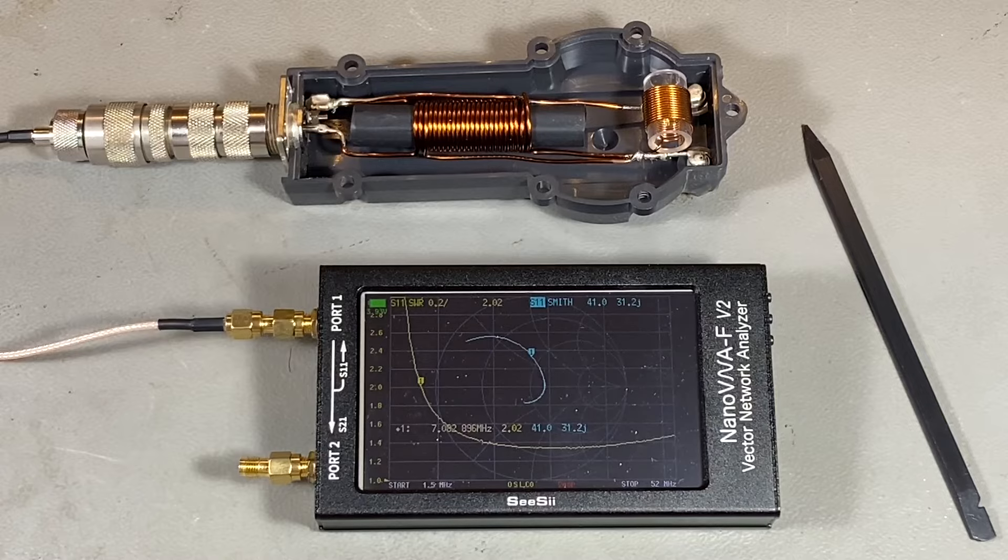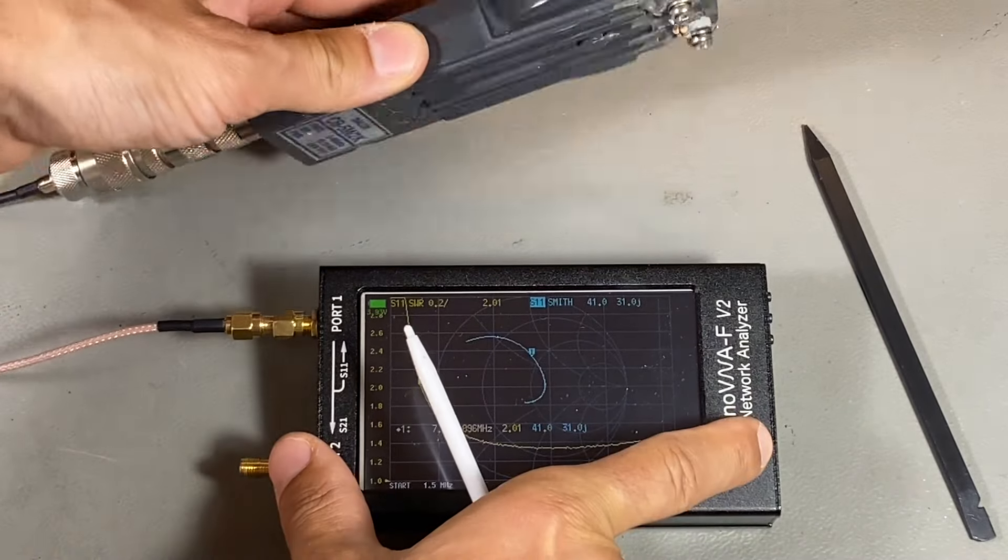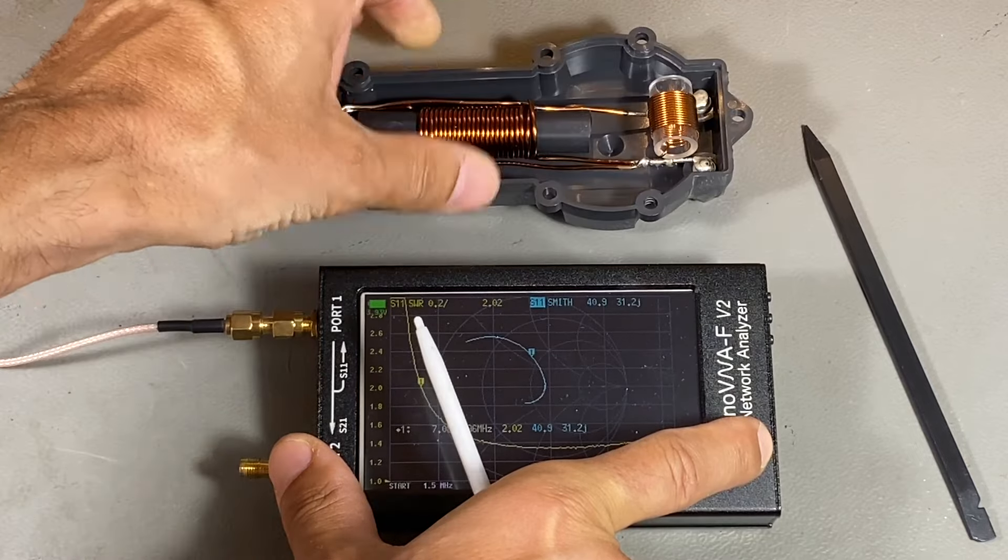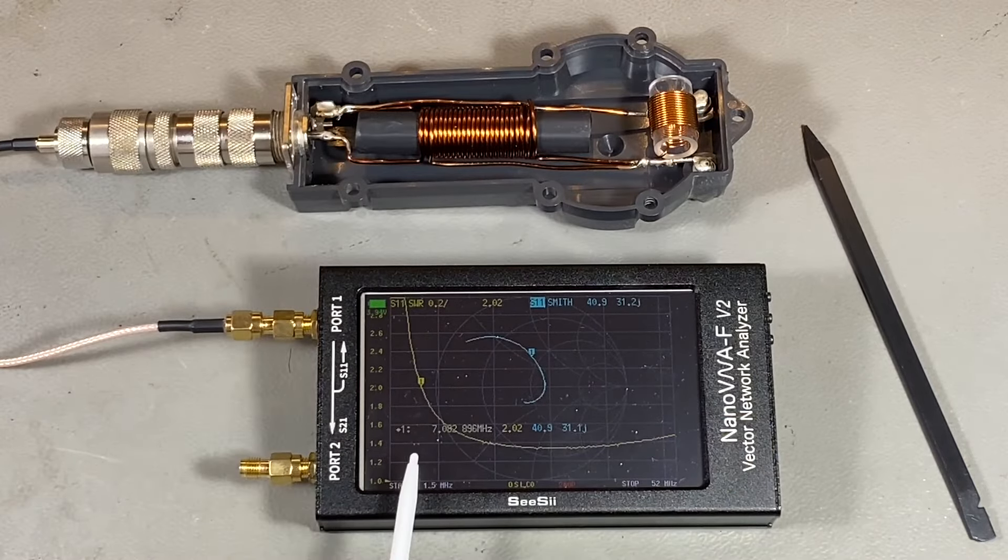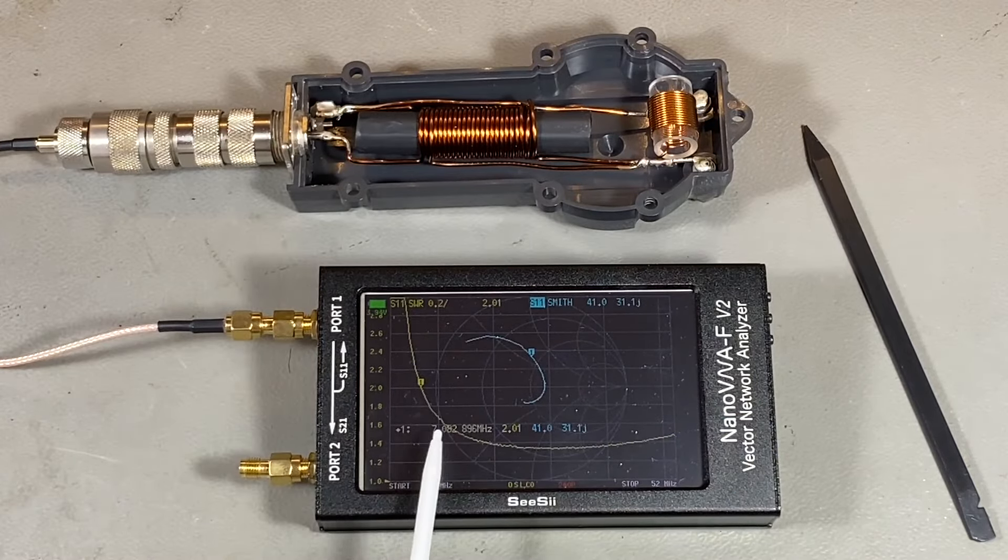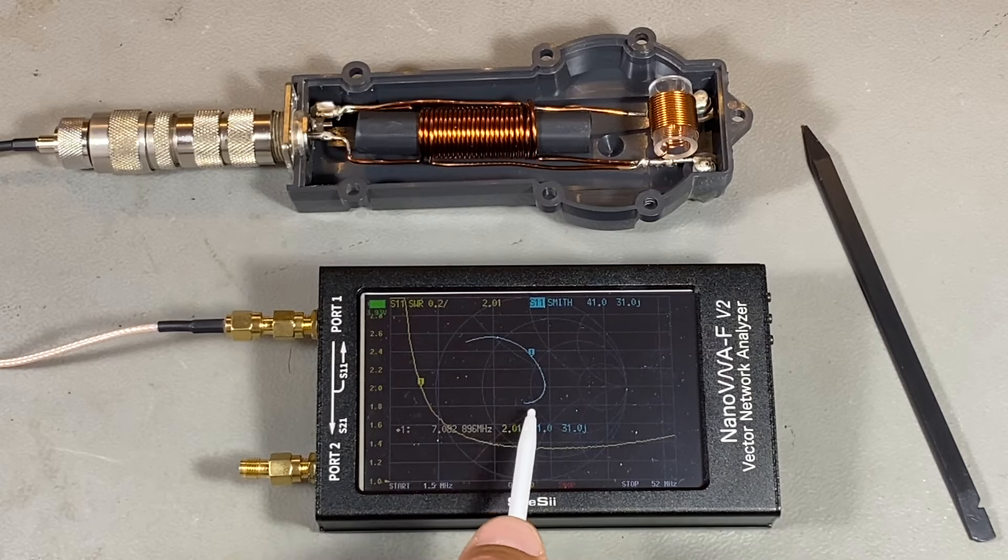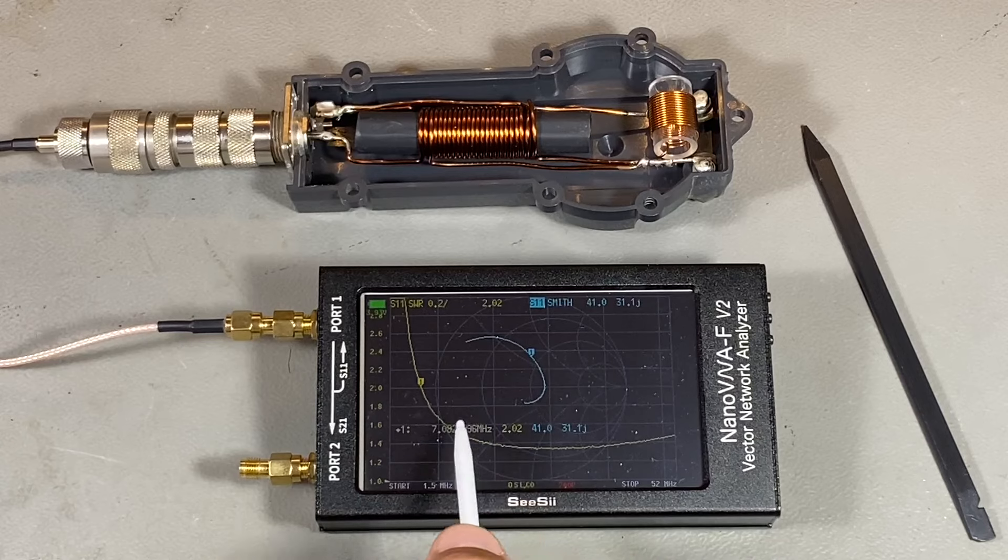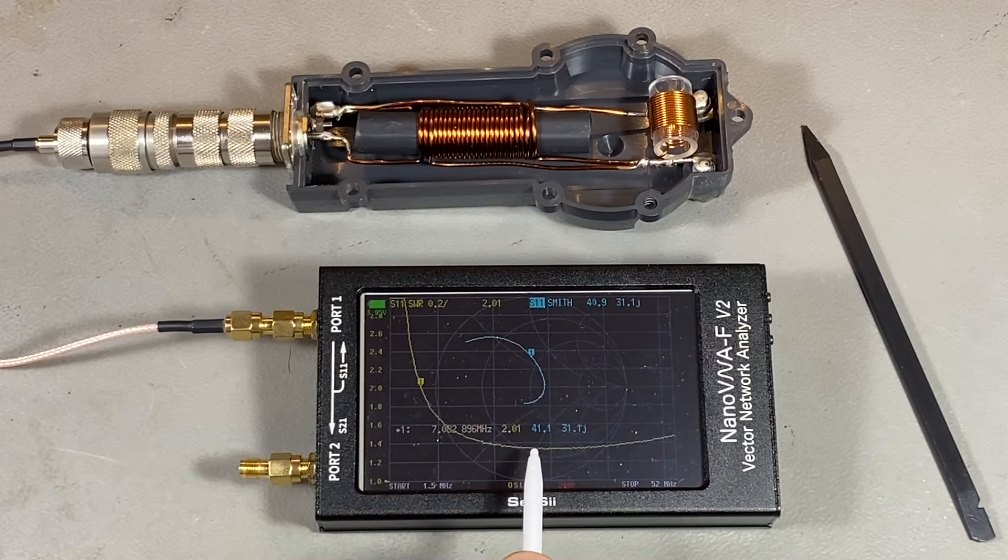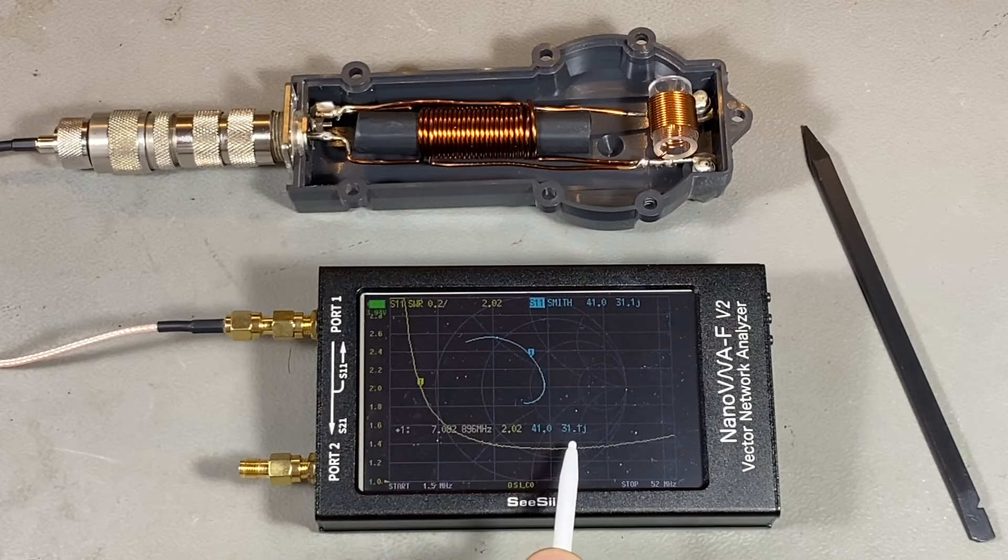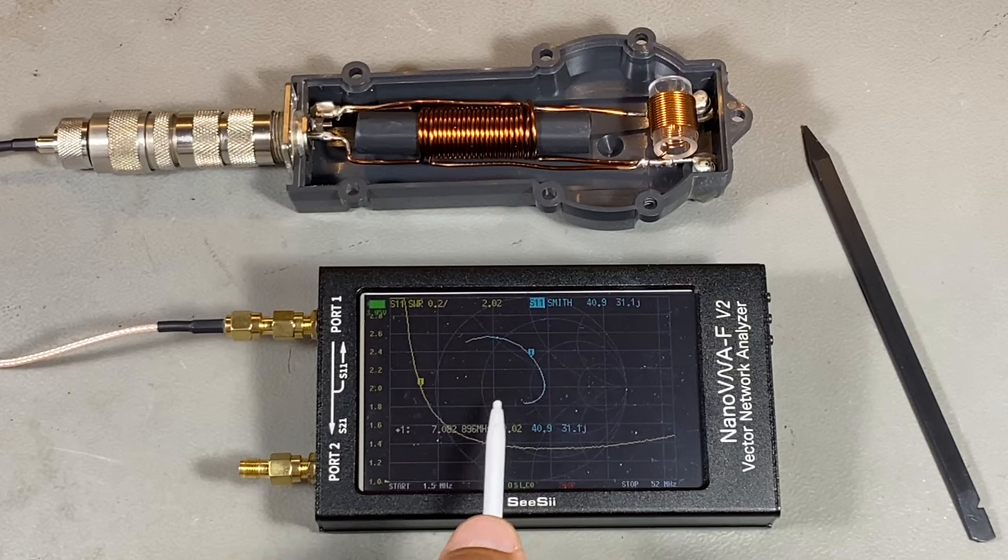As you can see, I still have the 50-ohm termination connected. And I can see in 40-meter span an SWR of 2. This is the curve in the Smith chart. And the impedance which the VNA sees is 41 real and 31 imaginary inductive.